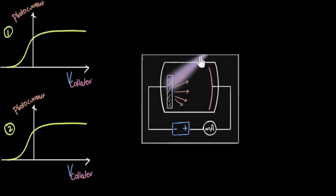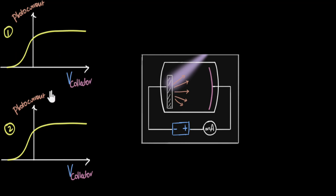In this video, we're going to change the brightness and the color of the light, or the intensity and the frequency of the light, and see how that affects the graph of the photoelectric effect.